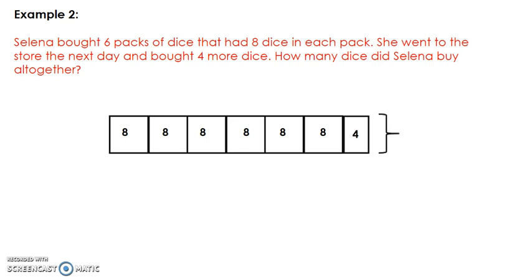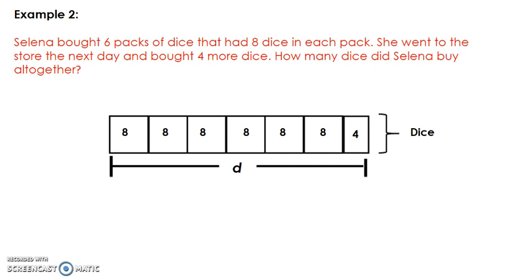This first row of my strip diagram represents all the dice Selena bought. I am trying to find the total number of dice Selena bought all together, so I will represent my whole with a line that begins at the beginning of the first pack of dice and goes up to the last four dice Selena bought the next day. In the middle I represent the total number of dice with the variable d.